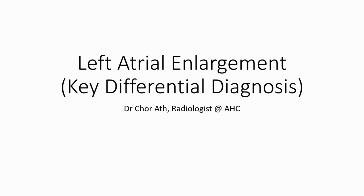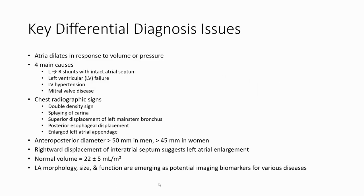Today I am going to talk about the key differences of the disease in lab, ideal, and large room. The key difference of the disease is shared. The atria dilate in response to volume or pressure. There are four main causes: left-to-right shunt with intact atrial septum, left ventricular failure, left ventricular hypertension, and mitral valve disease.